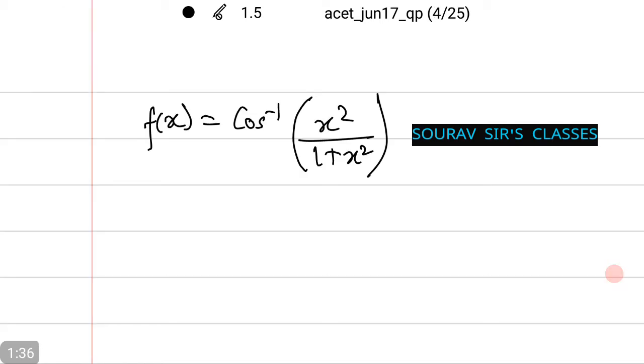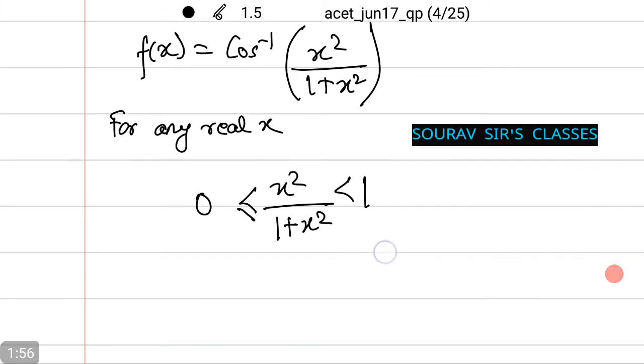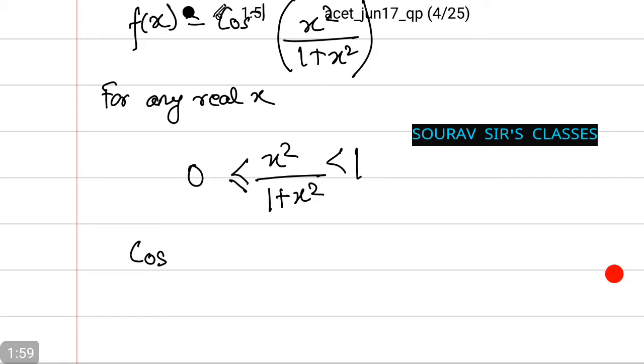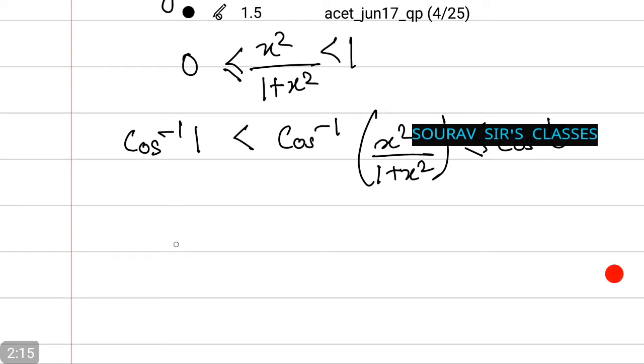Now let's see how to do this. For any real x, it is clear that x squared divided by 1 plus x squared lies between 0 and 1. Or putting this in the equation, we find cos inverse of 1 less than cos inverse of x squared by 1 plus x squared, which is less than cos inverse of 0.